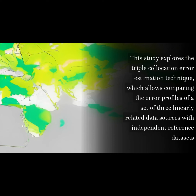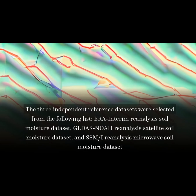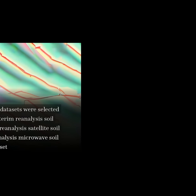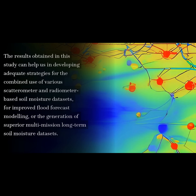This study explores the triple collocation error estimation technique, which allows comparing the error profiles of a set of three linearly related data sources with independent reference datasets. The three independent reference datasets were selected from the following list: ER Interim Reanalysis Soil Moisture Dataset, GLDS NOAA Reanalysis Satellite Soil Moisture Dataset, and SSM-I Reanalysis Microwave Soil Moisture Dataset.